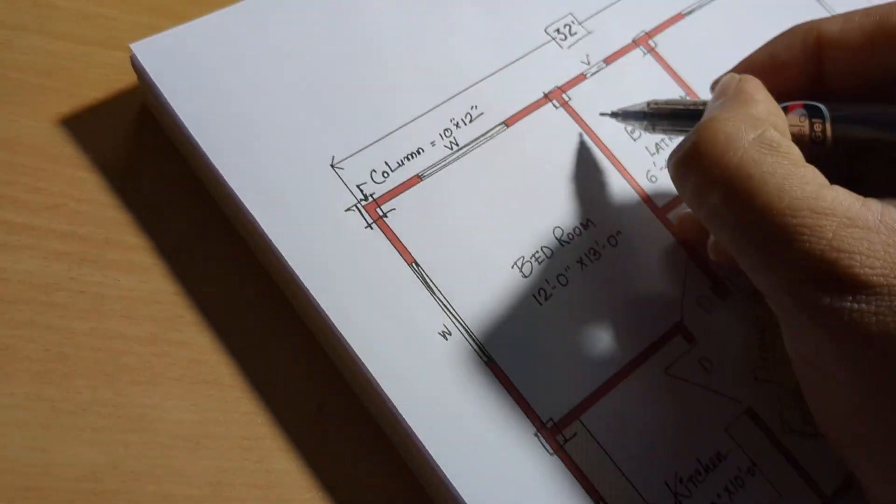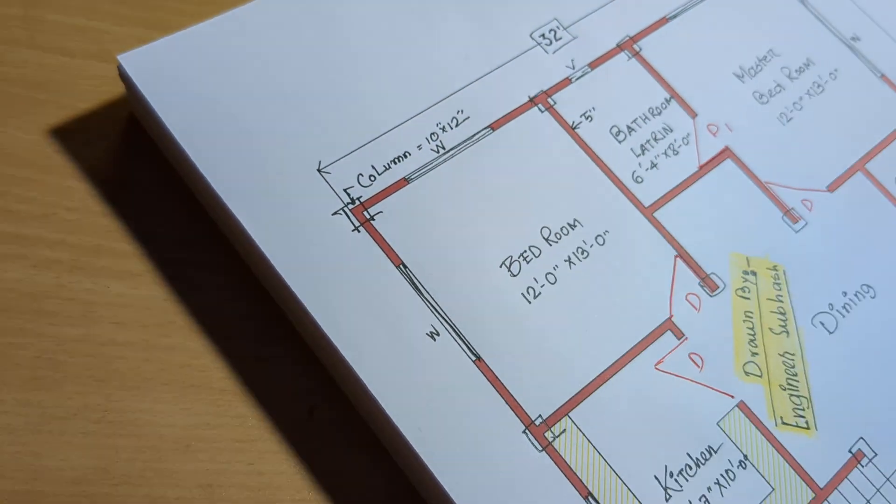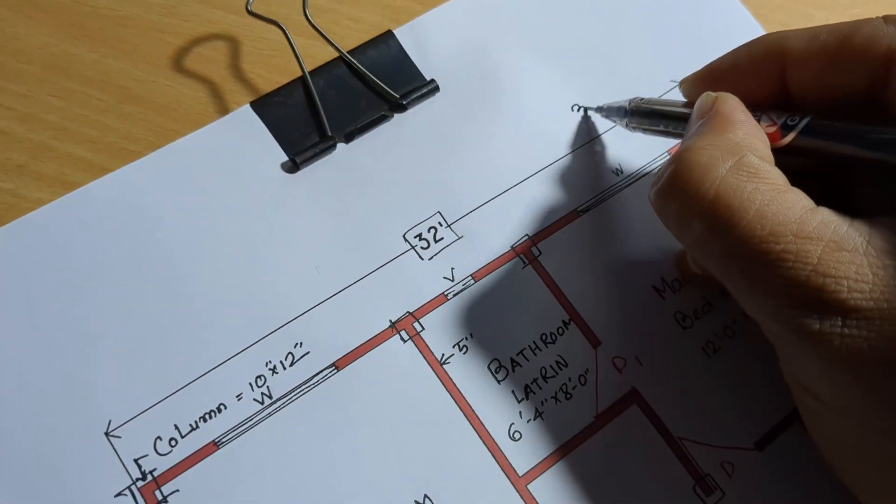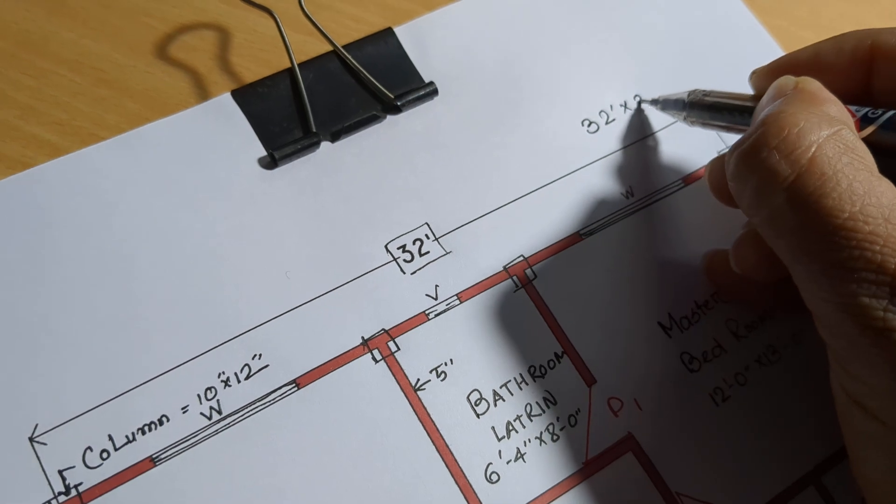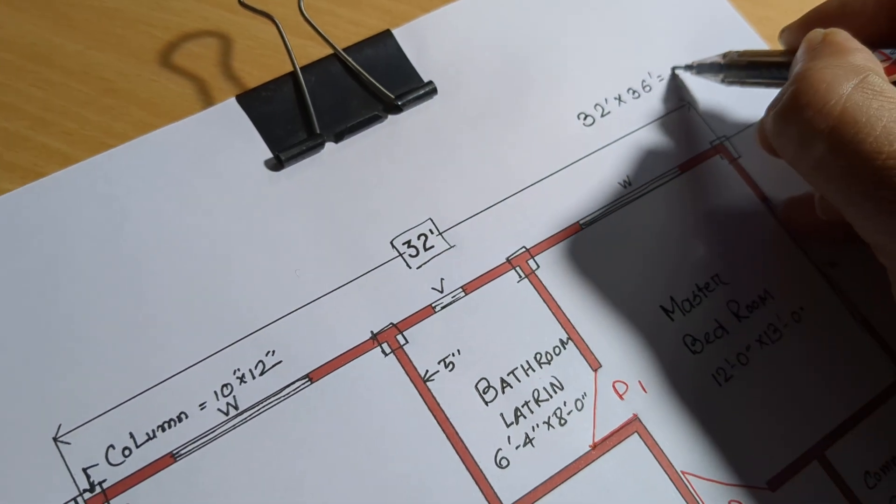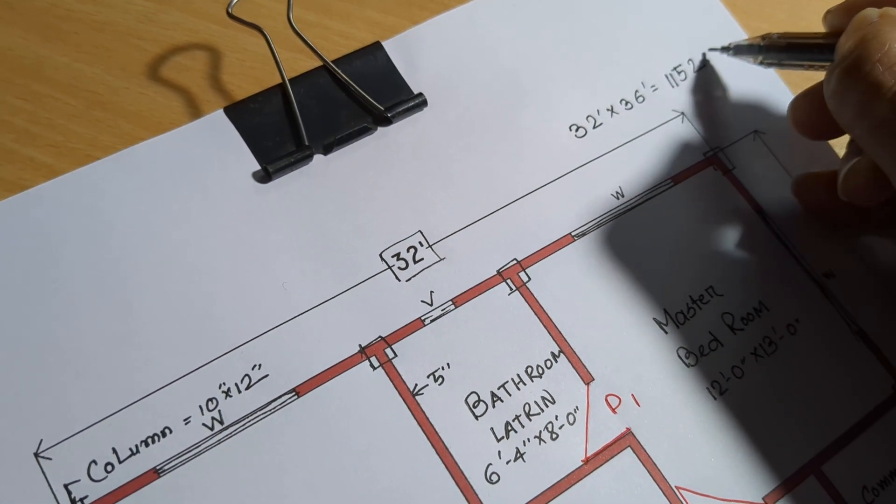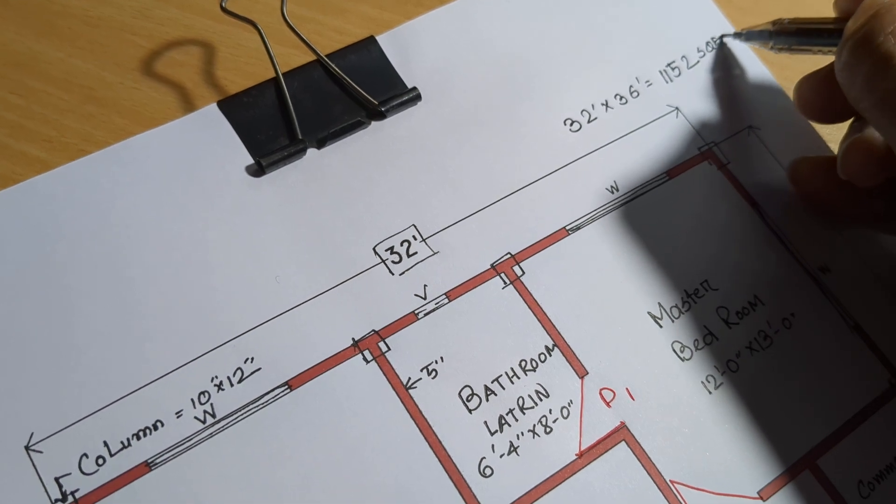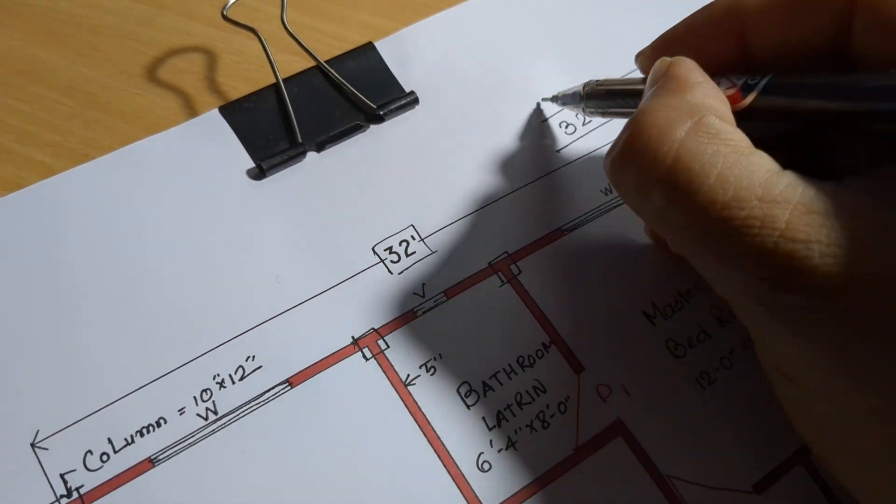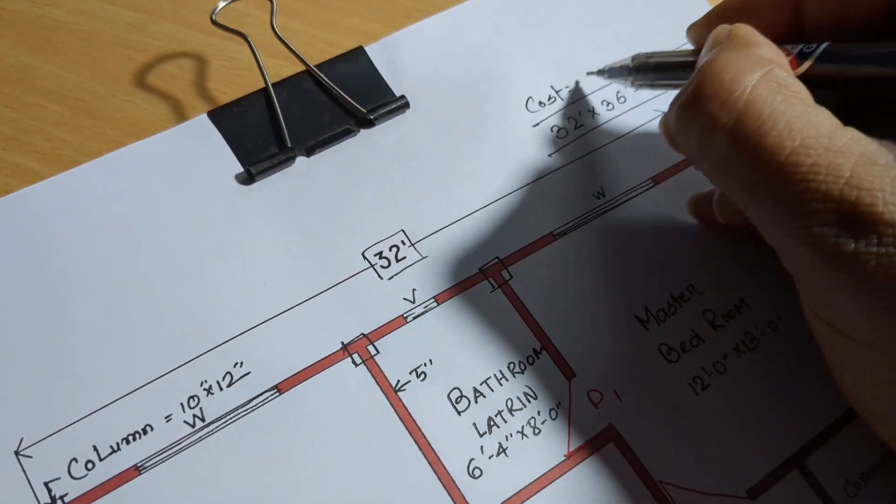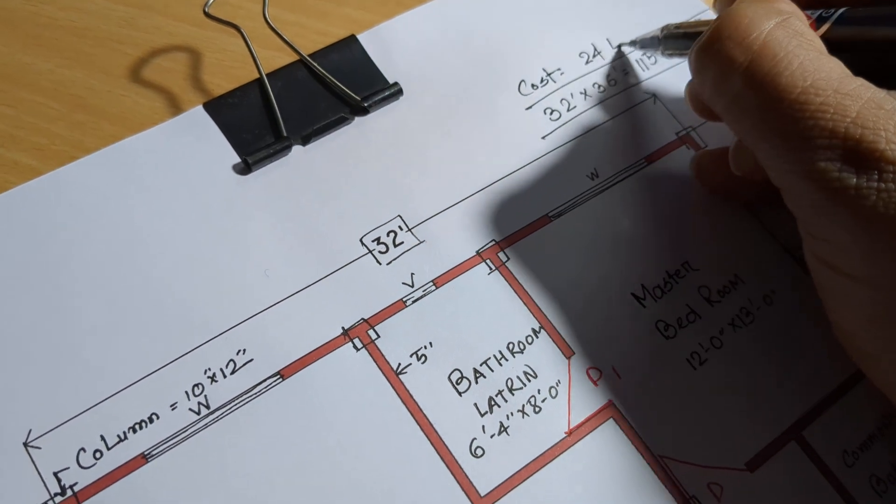10 by 12 inch column, 5 inch wall. 32 feet by 36 feet equals 1,152 square feet area. Cost: 24 lakh.